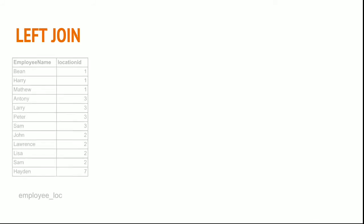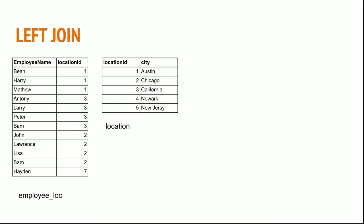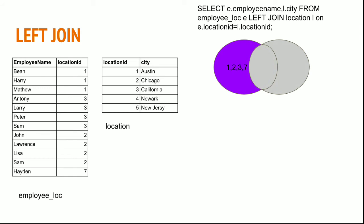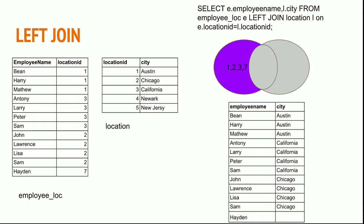Left join: in a similar way, when you join table 1 and table 2, just replace the INNER keyword with LEFT. It matches all the records 1, 2, 3, and 7. As 4 and 5 are not in the left table they will be ignored. For the matching IDs you have the city name, but the employee with location ID 7 is not present in the location table, so it is ignored and the city name will be returned as null.